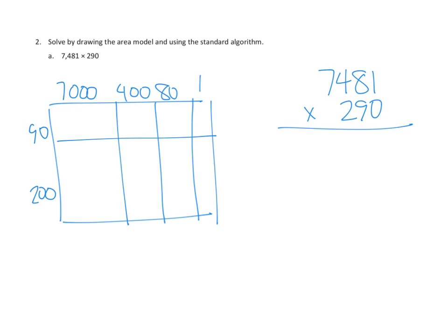We can solve from either end, but I always like the easiest problems first. So let's look at 90 times 1. 90 times 1 is simply 90. Now, 9 tens times 8 tens — that's going to give us 72. We've got one 10 here and one 10 here, so that's 100, meaning 7,200.